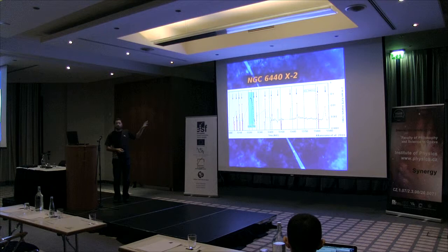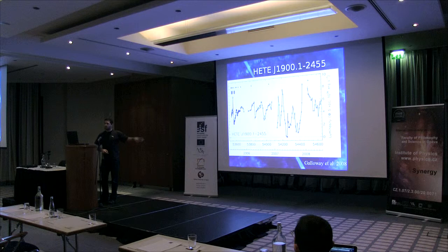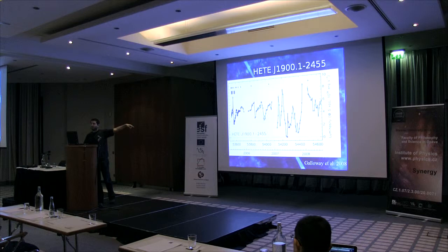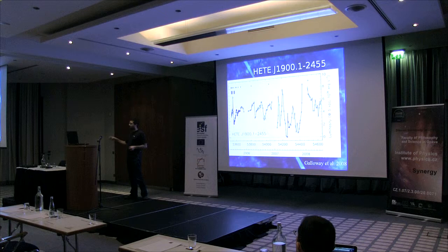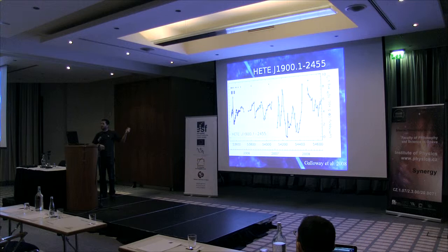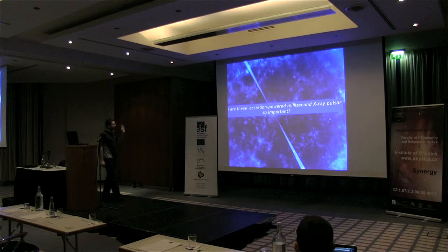On the other extreme for a pulsar is HETE J1900, which went into outburst in 2006 and the source is still active many years later. If you check neutron star sources that are not pulsars, you have the same phenomenology: very short outbursts, weeks, months, or even persistent sources that have been active since we first observed them. Coming back to AMXPs, there are now 30 accreting millisecond X-ray pulsars.